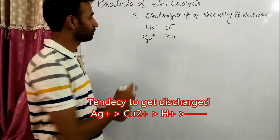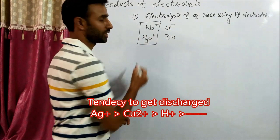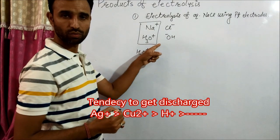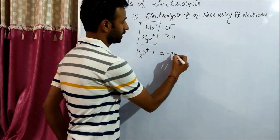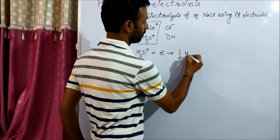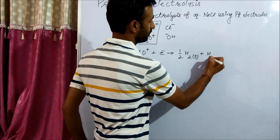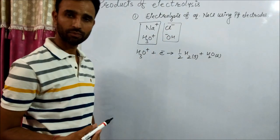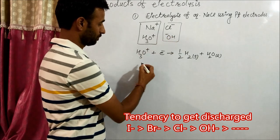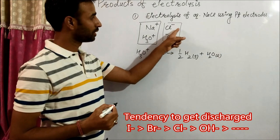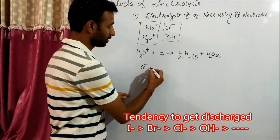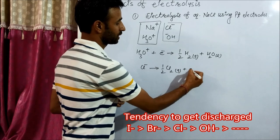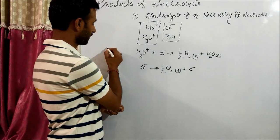Again compare Na+ and H3O+. You know H3O+ will gain electron and we get half of H2 gas plus H2O liquid. And what about Cl- and OH-? You know Cl- ion has lesser discharge potential. So Cl- ion loses electron to give half Cl2 gas plus electron. It is at cathode.